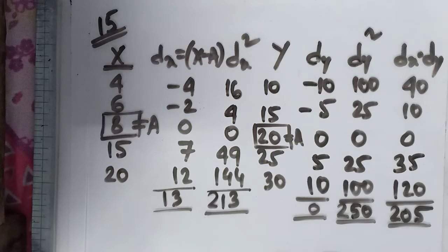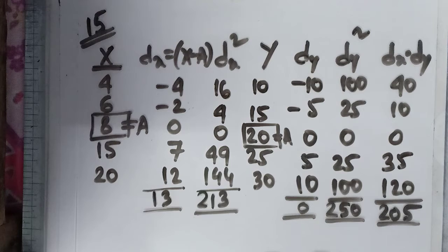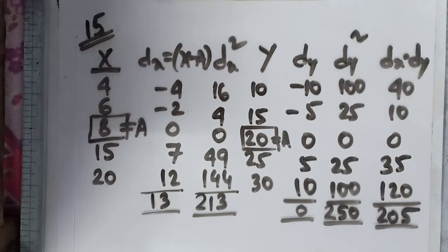Now, by the shortcut method, let us do sum number 15 from your book. The values of x are given as 4, 6, 8, 15, 20 and the values of y are given as 10, 15, 20, 25 and 30.